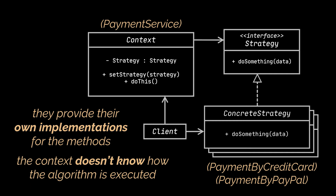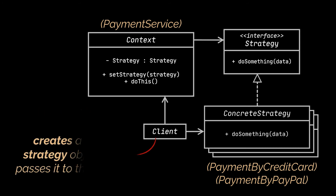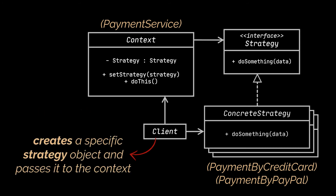The context doesn't know what type of strategy it works with or how the algorithm is executed. Finally, the client should create a specific strategy object and pass it to the context, which must expose a setter for this strategy.